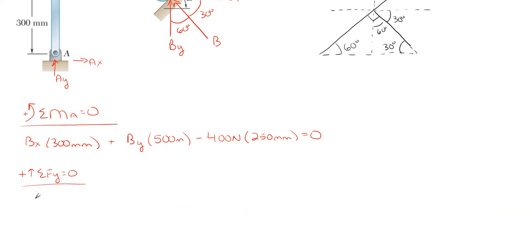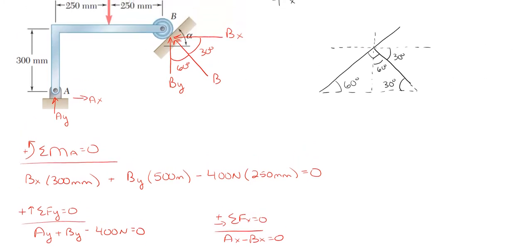So if we sum forces in the y direction, we will just have A sub y plus B sub y minusing off the 400 newtons equal to zero. And if we wrote out the x equation, we would just have simplistically A sub x minus B sub x equal to zero. So as you can see, we have too many unknowns going on here, too many unknowns for our three equations. So whenever this happens, and this typically happens whenever you have a roller at an angle or on an inclined plane, what you're going to do is that you're going to put B sub x and B sub y in terms of B,